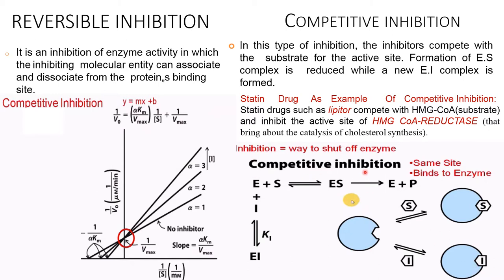An example of competitive inhibition is statin drugs, which compete for the HMG-CoA substrate and inhibit the activity of HMG-CoA reductase, which brings about the catalysis of cholesterol synthesis.